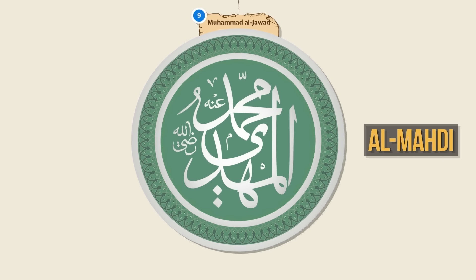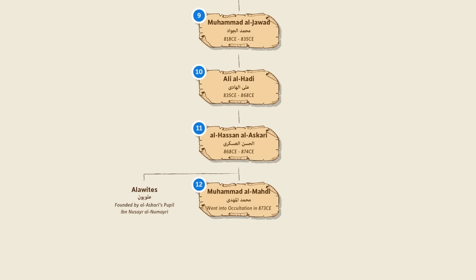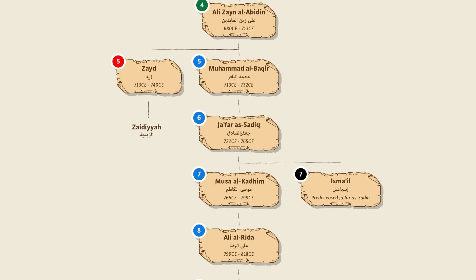Going back to Hassan al-Askari, at his death another disciple named Ibn Nusayr claimed to be the agent of the hidden Imam himself, hence breaking away from the mainstream Twelvers. He was excommunicated by them and therefore founded the Alawite sect, which is a very secret branch of Shias found mainly in Syria.